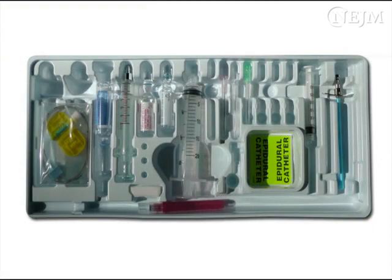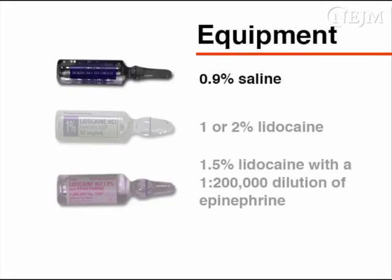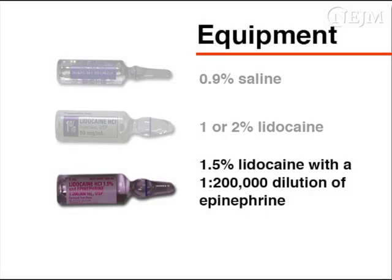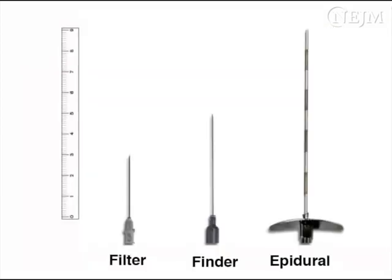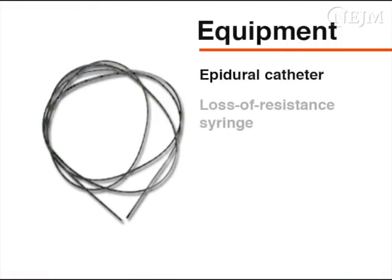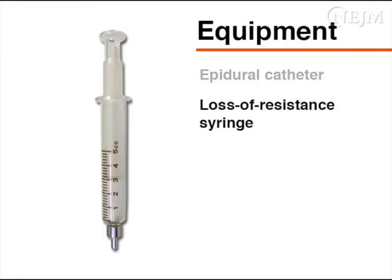The necessary equipment is often available as a sterile epidural kit. Certain components are essential: medications including 0.9% saline, 1% or 2% lidocaine, and 1.5% lidocaine with a 1 in 200,000 dilution of epinephrine. The kit may also contain a 19-gauge 3-centimeter filter needle, a 25-gauge 5-centimeter local infiltration and finder needle, and a 17-gauge 9-centimeter epidural needle (also called a Tuohy needle), which has markings at 1-centimeter intervals and includes a stylet. The kit should also contain an epidural catheter and a loss-of-resistance syringe, a low-friction syringe specifically designed to help identify the epidural space.